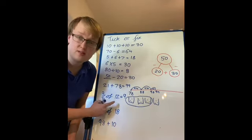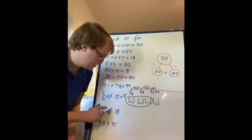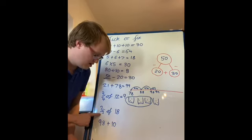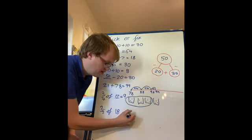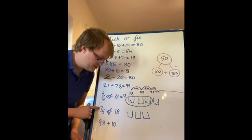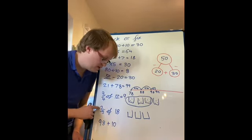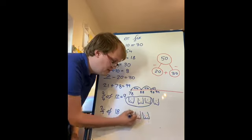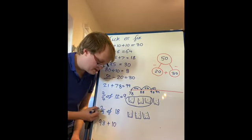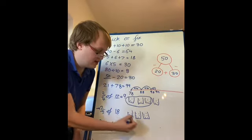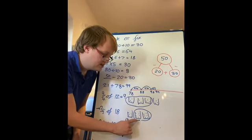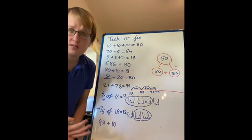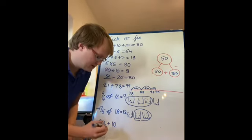And next one: two thirds of 18. So I've got to make this into how many equal parts? Look at our denominator: three. And the numerator, the number on the top, tells me how many I need to do. But we need to share these out first. So 18: 1, 2, 3, 4, 5, 6, 7, 8, 9, 10, 11, 12, 13, 14, 15, 16, 17, 18. And this numerator means I need to have two of these. So two of these, 6 and 6 is 12. So two thirds of 18 are 12.